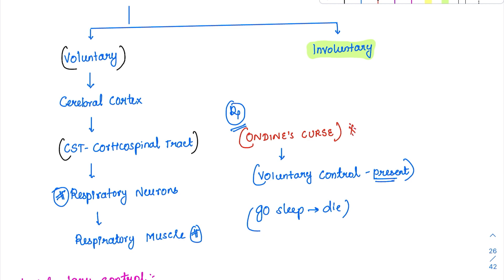In Ondine's curse, there is only voluntary control — the involuntary control is taken off. But involuntary control is the one which creates the normal rhythm of respiration, which is very very important.